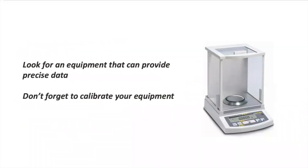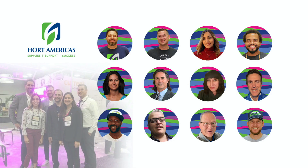An additional recommendation for measuring dry and fresh weight is to look for the correct equipment to get the most precise data. An analytical balance, for example, is usually used to get precise data for objects weighing less than approximately 100 grams. This equipment can easily lose calibration, so be sure to calibrate any balance you are using before weighing your product. Analytical balances are especially useful when measuring dry weight.